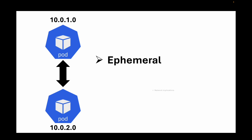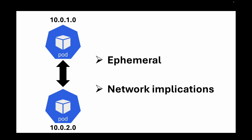One thing you need to understand is that pods are ephemeral, and this has implications for a number of things. In this session we are only going to talk about the network implications. When a pod is launched it's assigned a unique IP address, which allows intercommunication with other pods and components within the cluster. But if pods are ephemeral, the list of IPs assigned for any replicas will be continuously changing.